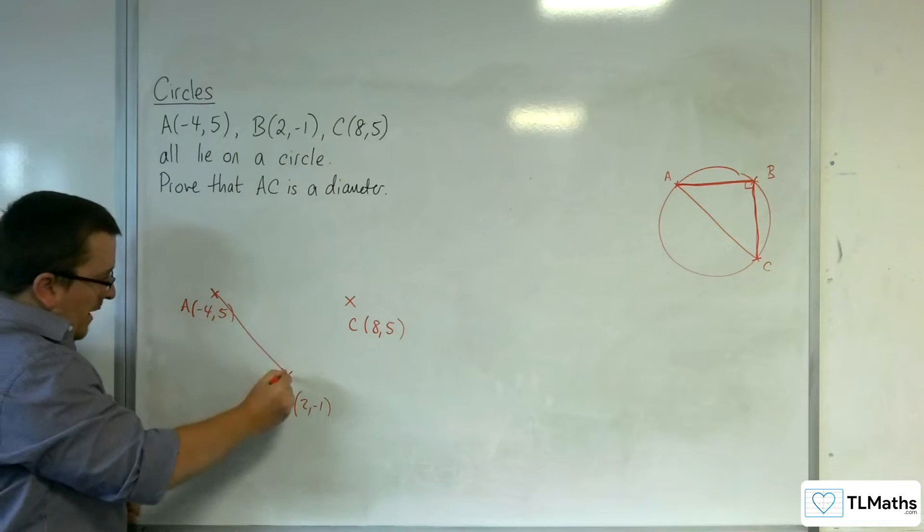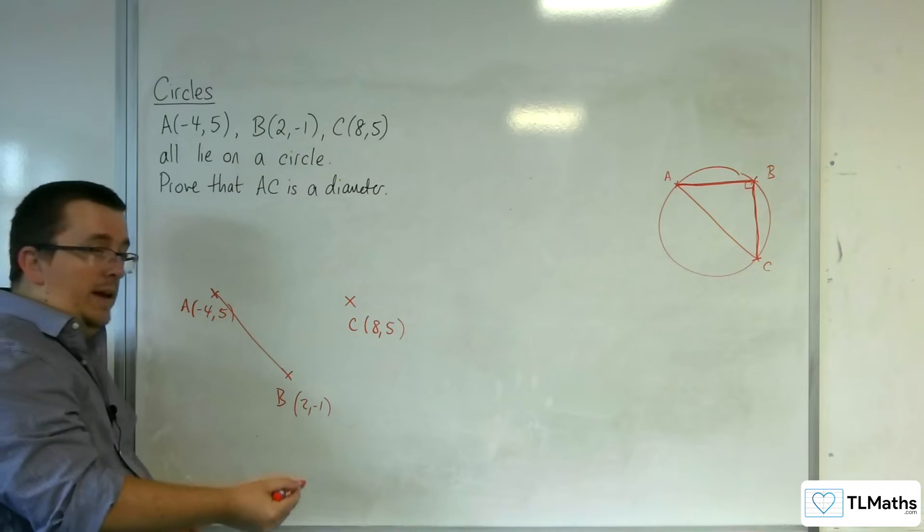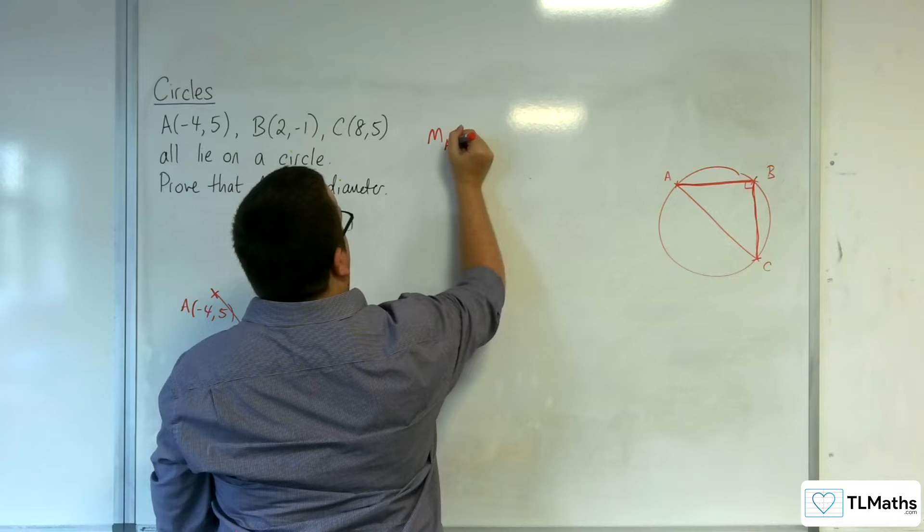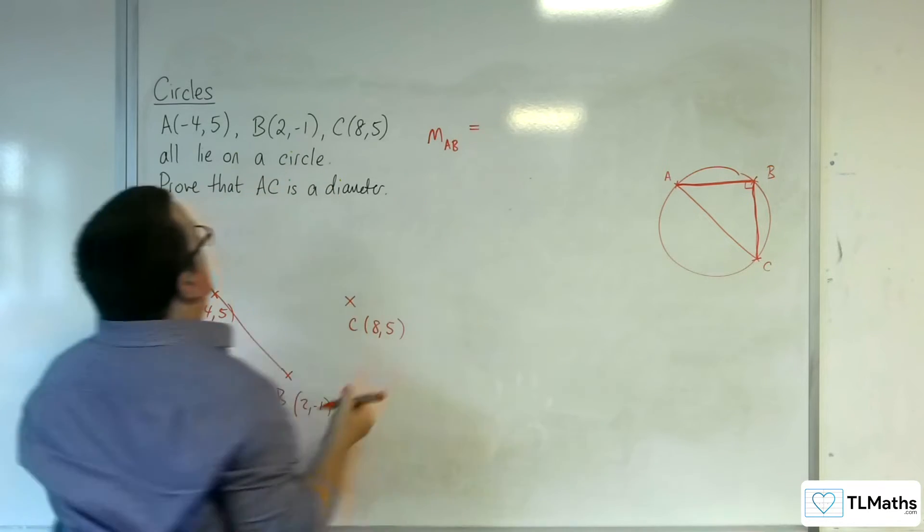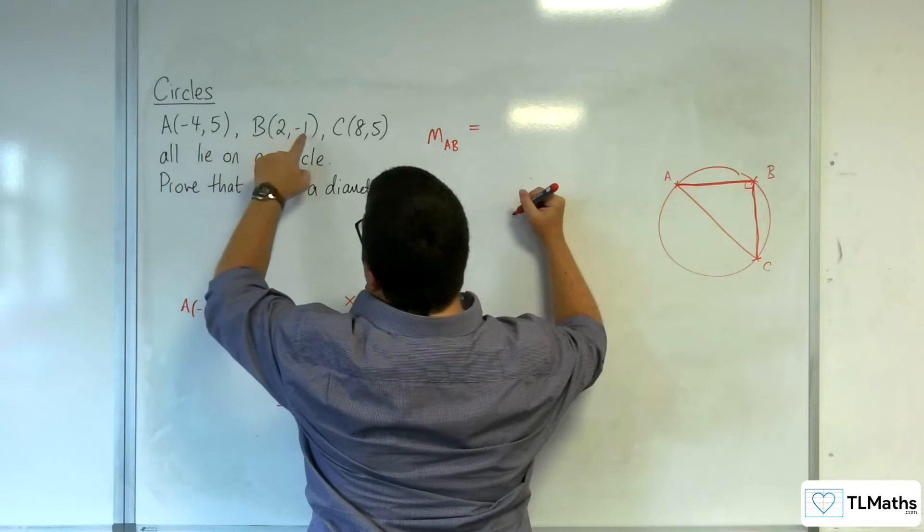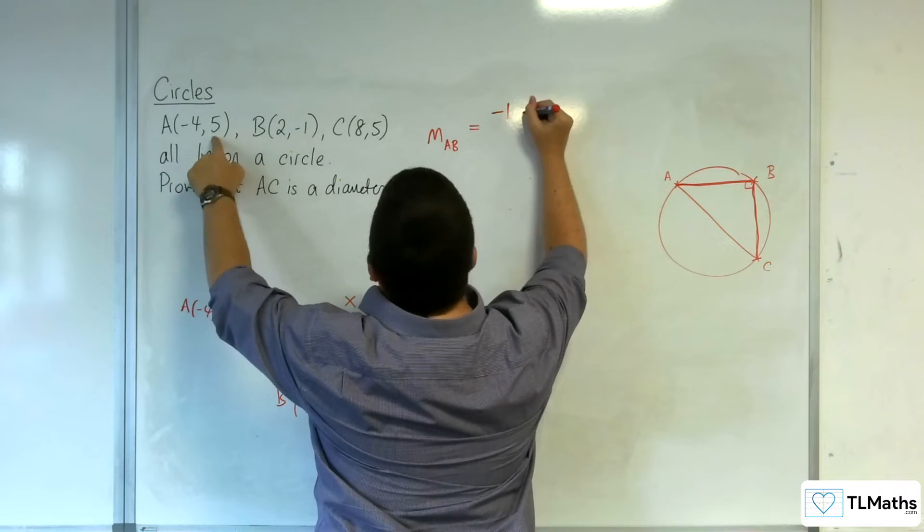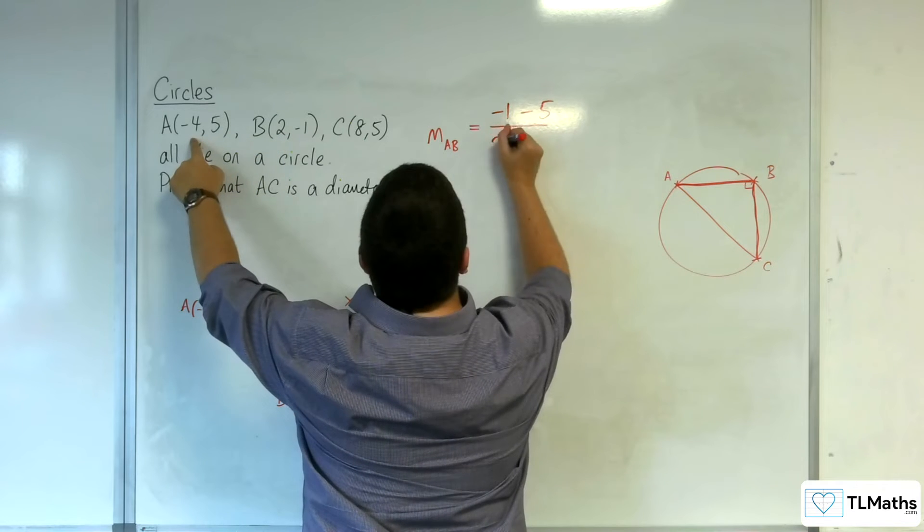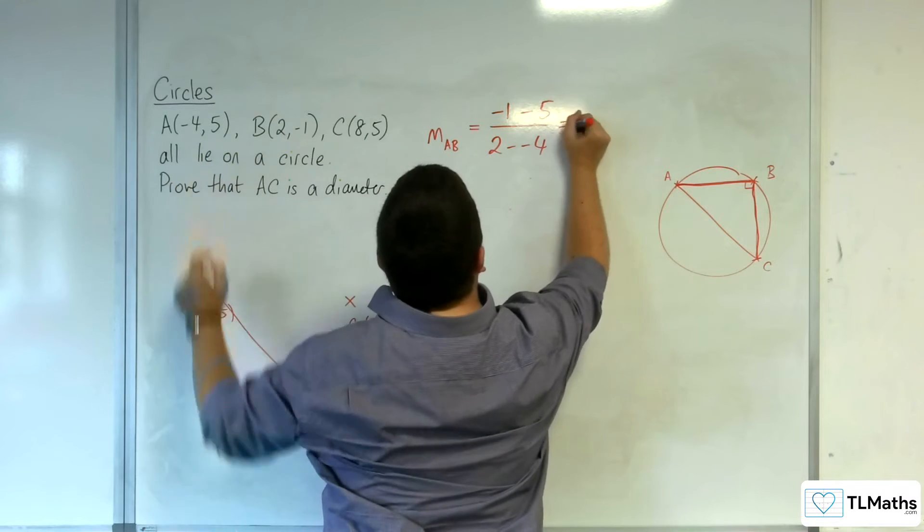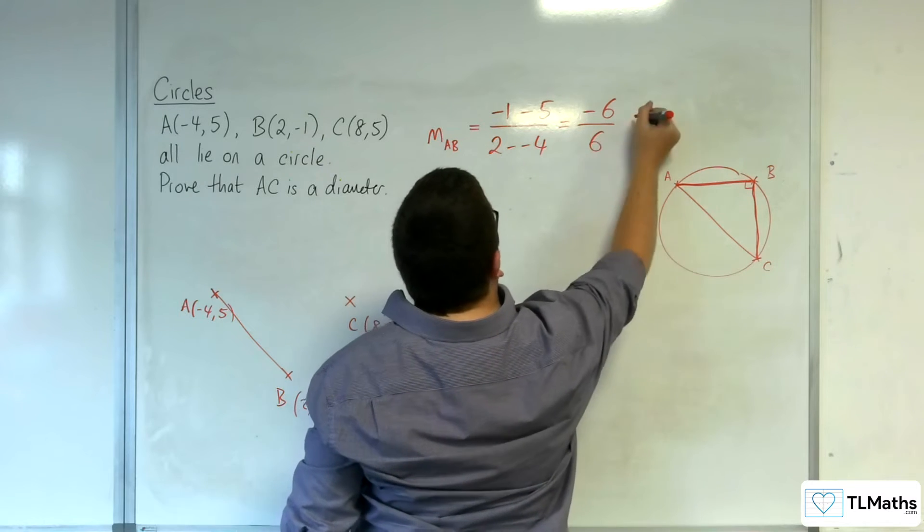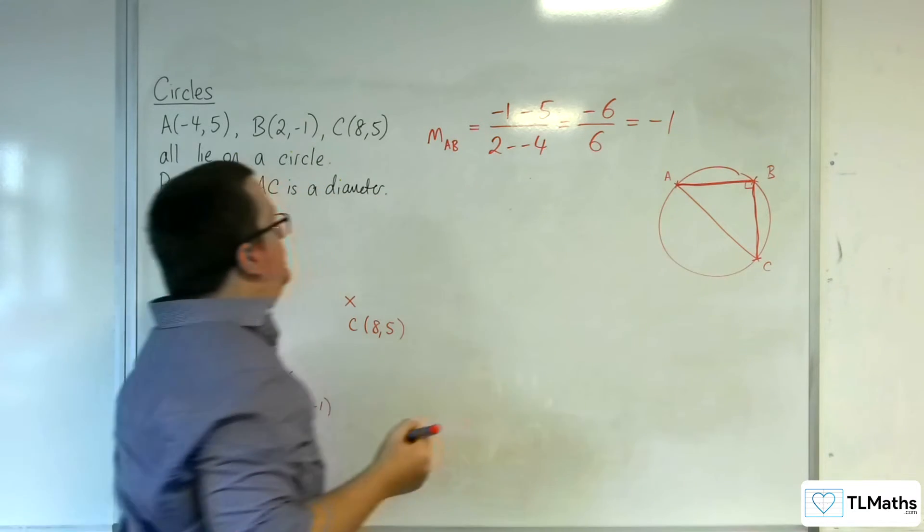So, what we're going to need to do is figure out the gradient of AB. So, I'll label that as the gradient of AB. So, that's going to be the difference in the Y coordinate. So, we'll have minus one, take away five, divided by two, take away minus four. So, we've got minus six in the numerator, and we've got six in the denominator, and so that's minus one.